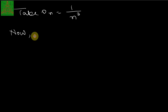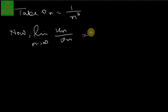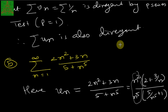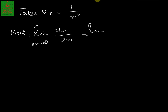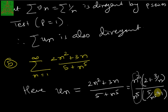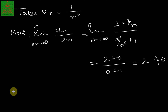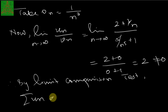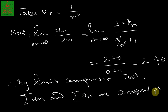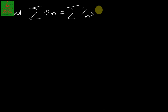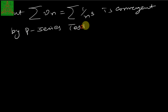The limit of u_n / v_n as n → ∞ is the limit of [(2 + 3/n)/(5/n⁵ + 1)] = (2 + 0)/(0 + 1) = 2, which is a finite non-zero number. Therefore by the limit comparison test, summation of u_n and summation of v_n are convergent or divergent together.